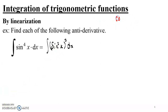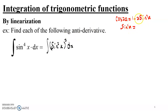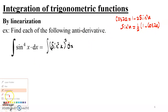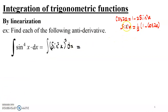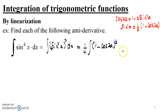We now linearize sine squared using the double angle identity of cosine in terms of sine. From cosine 2a equals 1 minus 2 sine squared a, solving for sine squared a gives half times (1 minus cosine 2a). Replacing that in the integral — and remembering sine squared is itself squared — gives one quarter times the integral of (1 minus cosine 2x) all squared dx.